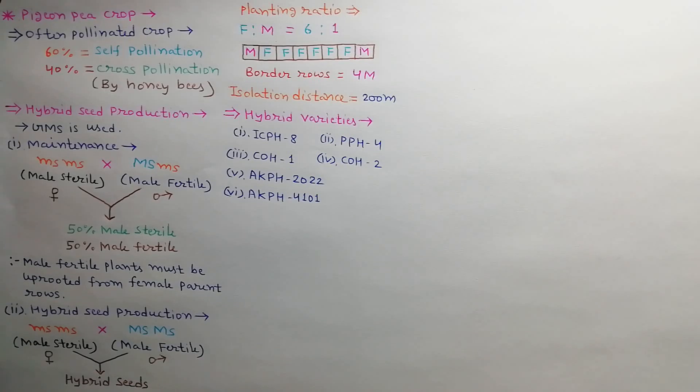Following hybrid varieties of pigeon pea are produced: ICPH-8, PPH-4, COH-1, COH-2, AKPH-2022, and AKPH-4101.